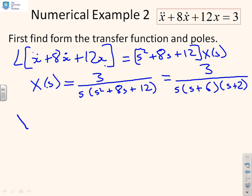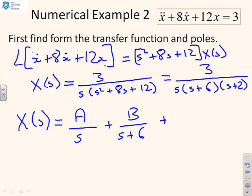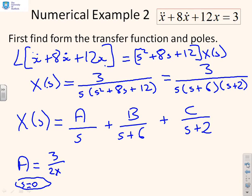The next step is going to be to write this out in partial fractions. So x of s is going to be something over s plus something over (s + 6) plus something over (s + 2). Now, if I use the cover-up rule to find A, I'm going to set s equal to 0 and cross the s from x of s. When I do that, I'm going to get 3 over (2 times 6), which is going to be 1 over 4.